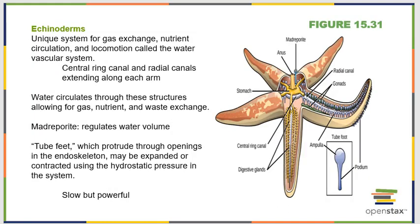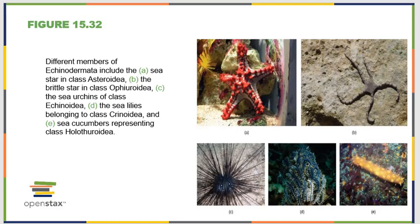In the physical structure of echinoderms, the water vascular canal is unique. Water comes in through the madreporite — visible at the top of the picture — and goes out through those tube feet, allowing them to use hydrostatic pressure for movement. It's not super fast, but it's incredibly powerful. There are many different members of Echinodermata, though they all look relatively similar to one another, with the exception of sea cucumbers, which look like bags on the ocean floor — though you can still see the little spines that place them in Echinodermata.